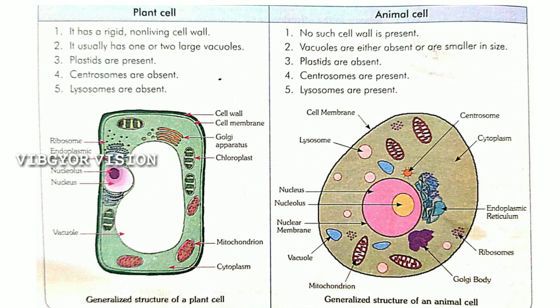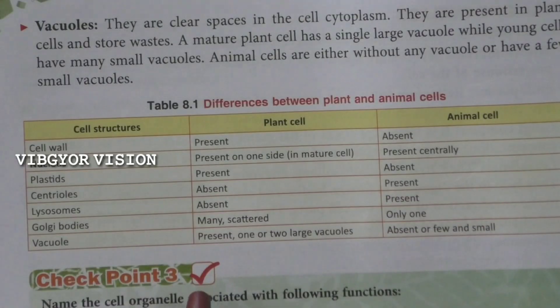And what about the vacuole? In plant cell, the vacuole is present and there will be one or two large vacuoles — the size of the vacuole will be large in the case of plant cell. In animal cell, vacuoles are mostly absent, and if present they will be few and small.